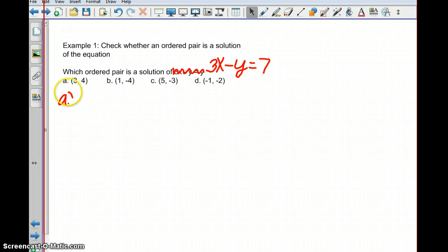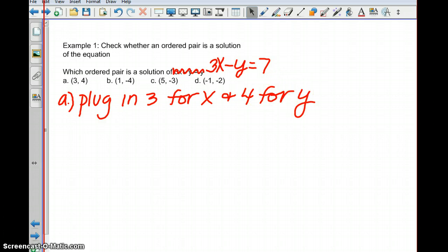So let's start with a. Let's check to see whether or not the point (3, 4) is the solution to that equation. So the way we're going to do that is we're going to plug in 3 for x and 4 for y. So we take the equation 3x minus y equals 7 and we replace the x with 3 and the y with 4. And then we see that this produces a true statement. 3 times 3 is 9 minus 4. So does that equal 7? Nope. So that's not a solution.